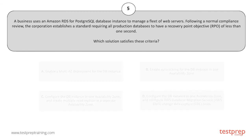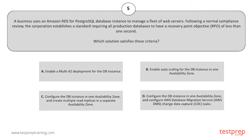Your options are: A. Enable a Multi-AZ deployment for the DB instance. B. Enable auto-scaling for the DB instance in one availability zone. C. Configure the DB instance in one availability zone and create multiple read replicas in a separate availability zone. D. Configure the DB instance in one availability zone and configure AWS Database Migration Service Change Data Capture tasks.